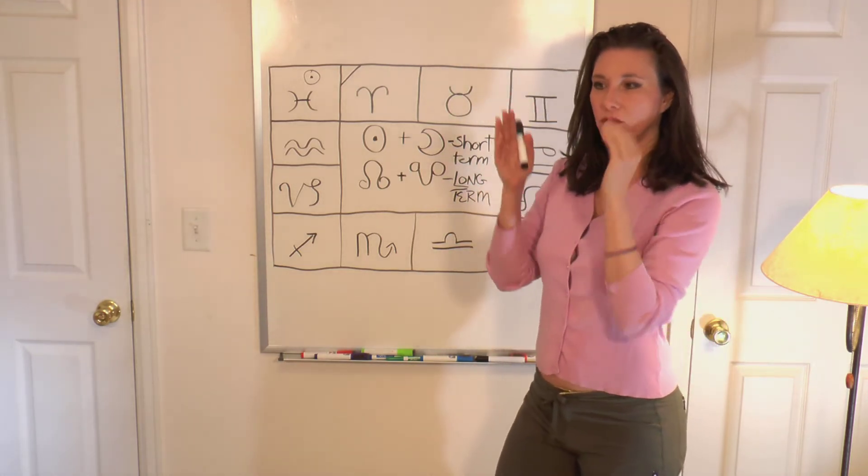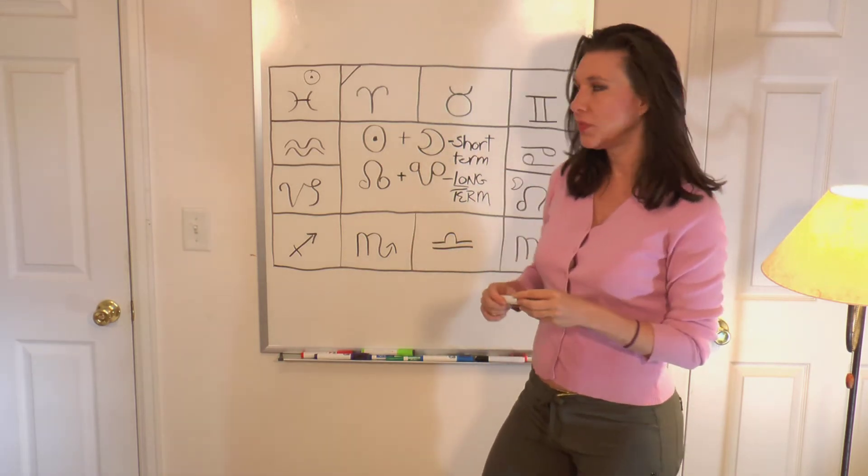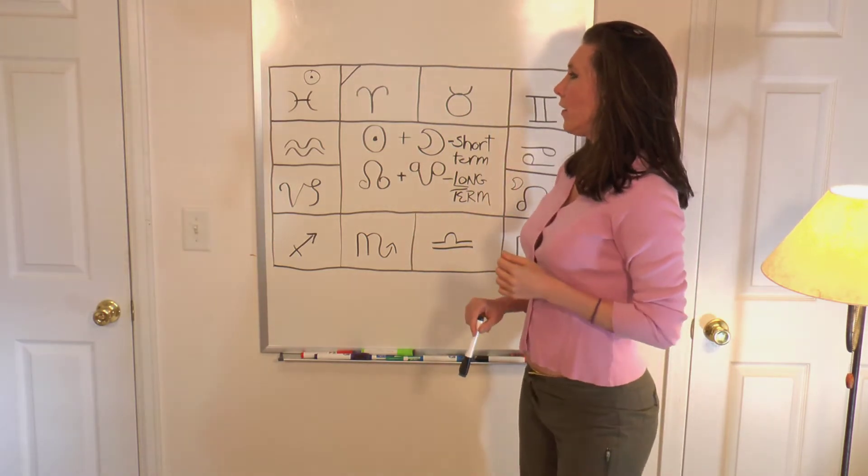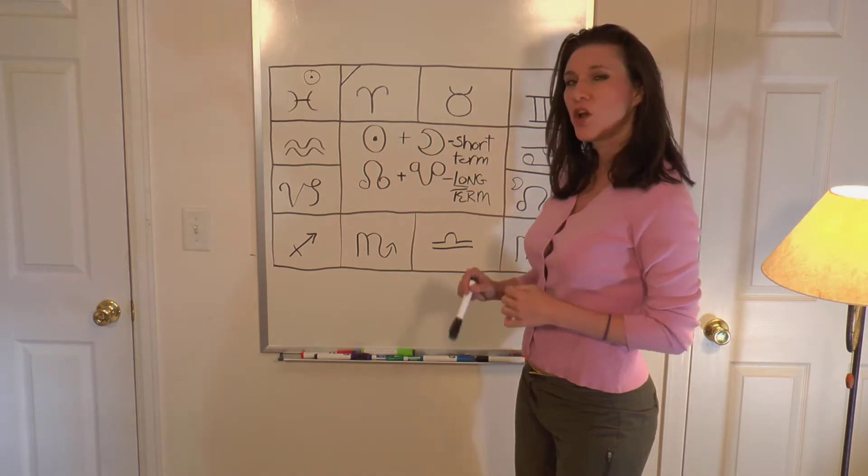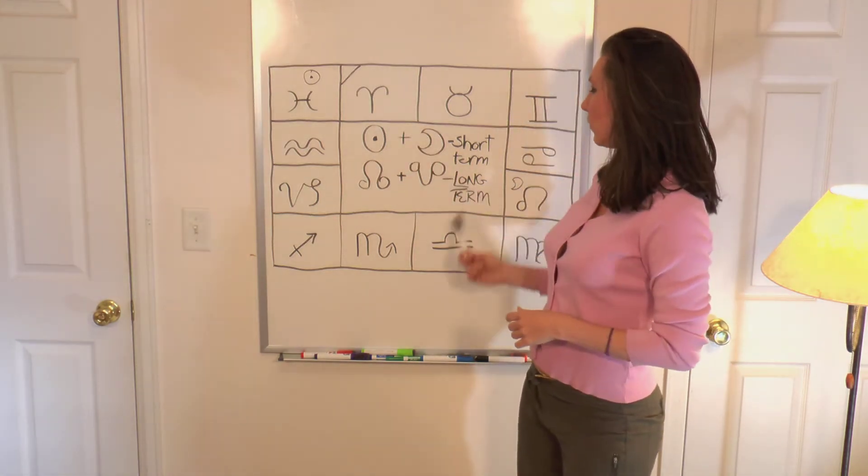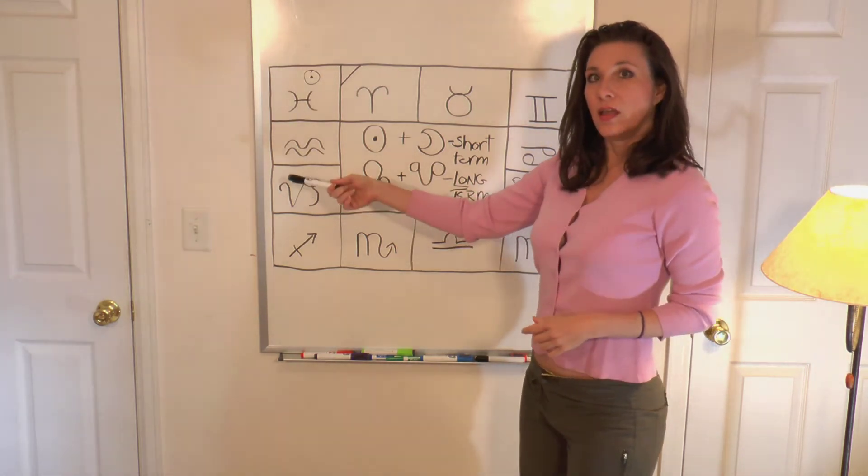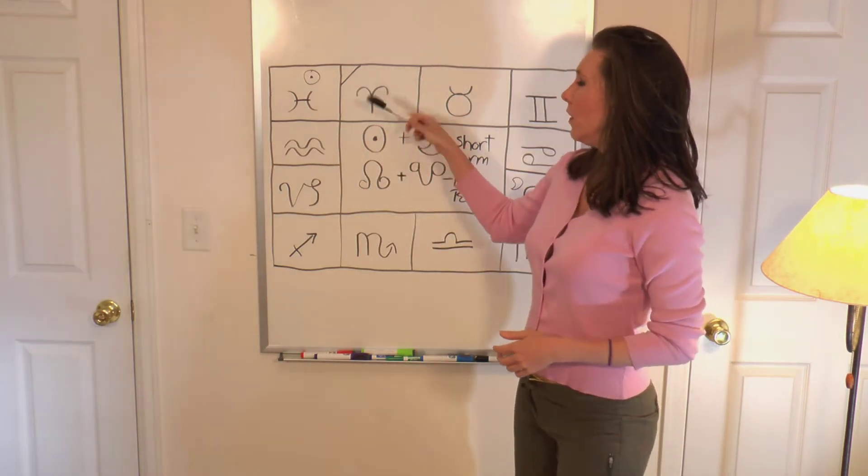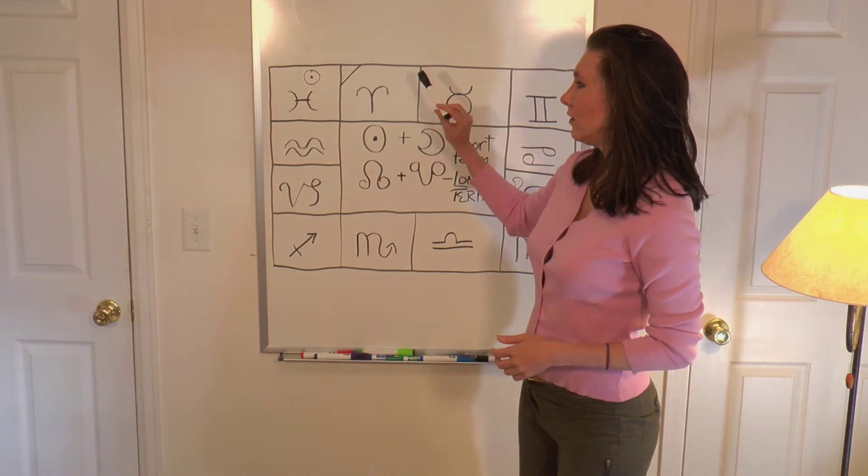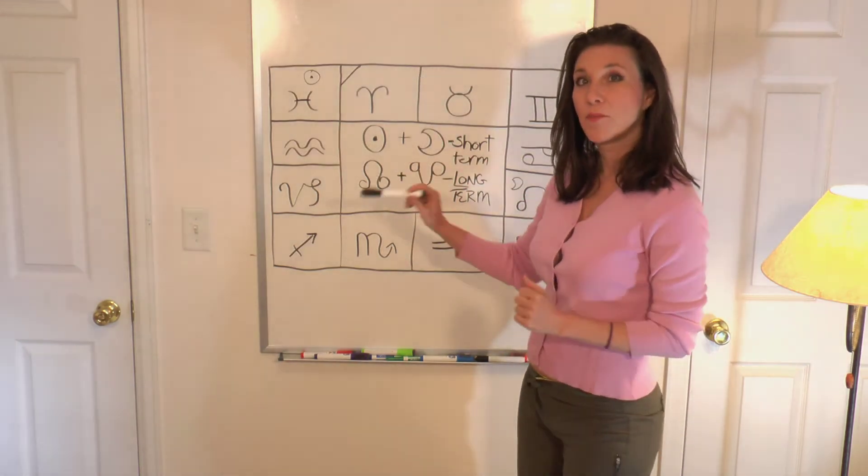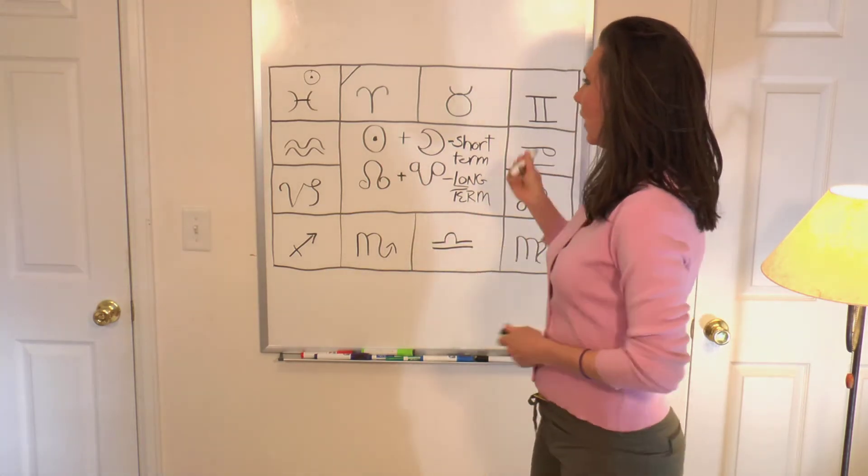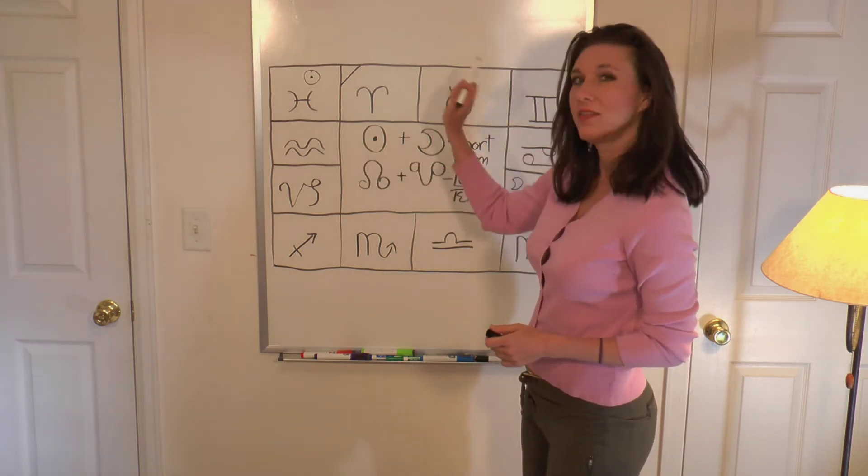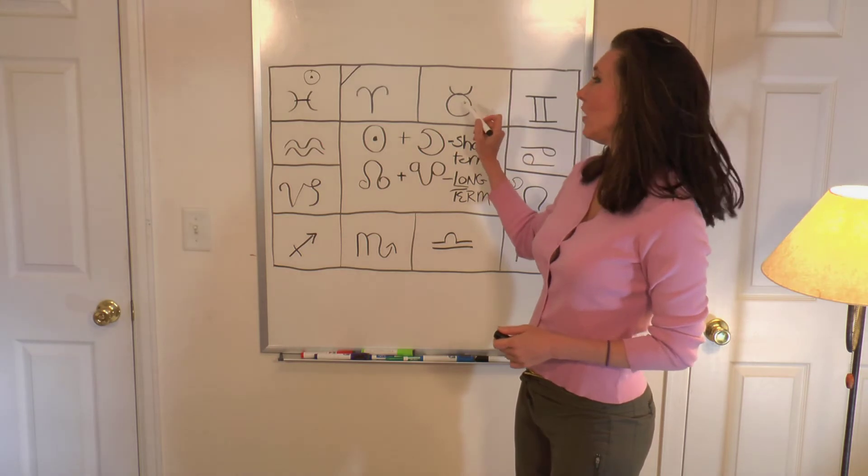Now, here's where it gets a little more complicated, but it's not a big deal. All of the cardinal signs, Aries, Cancer, Libra, and Capricorn, the signs that begin the beginning of the seasons, they all aspect fixed signs, except the one next to them. So that means Aries aspects all the fixed signs, Leo, Scorpio, and Aquarius, except for the one next to him, which is Taurus.